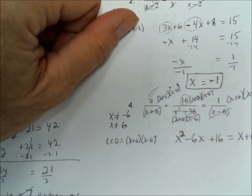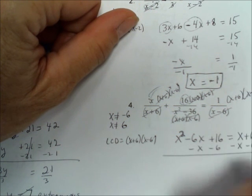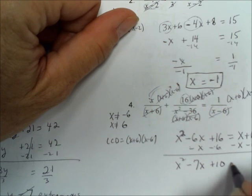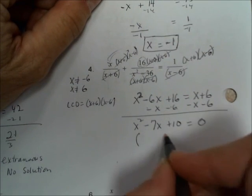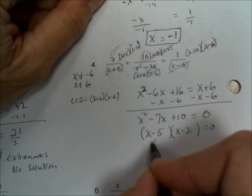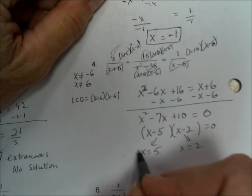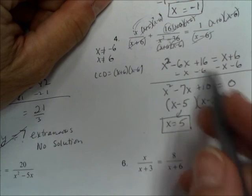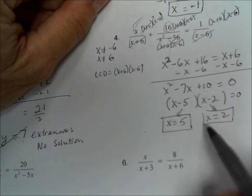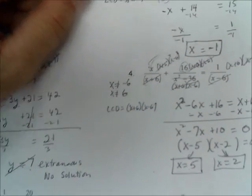This is quadratic because there's an x squared in it, so we set it equal to 0 by subtracting x and subtracting 6 from each side. Negative 6x minus x is negative 7x, and 16 minus 6 is positive 10, equal to 0. Factor this: factors of 10 that add up to negative 7 are negative 5 and negative 2. So x equals 5 and x equals 2. Since 5 and 2 are not on our list to reject, those are the two answers — and you can check by plugging them in.